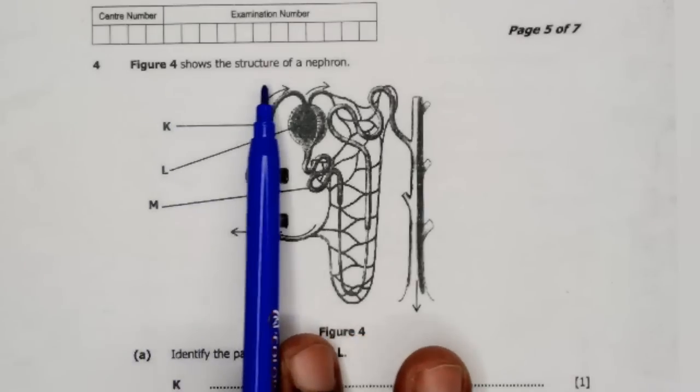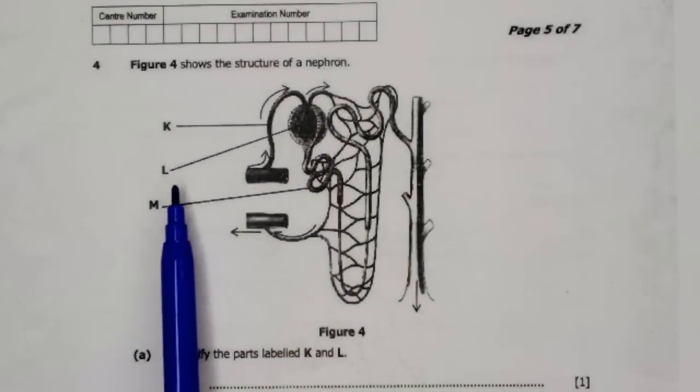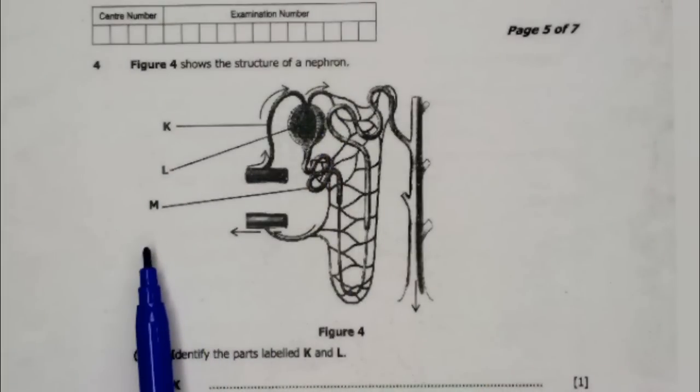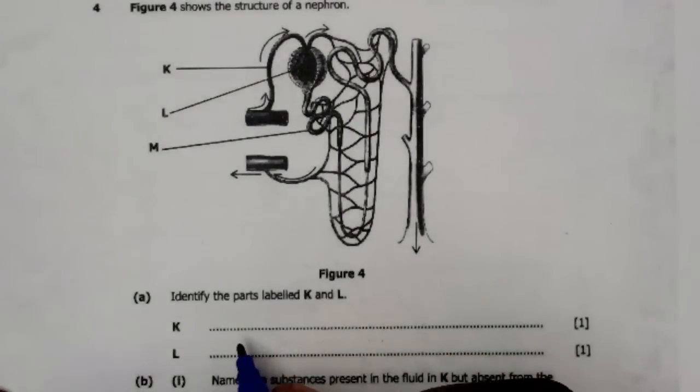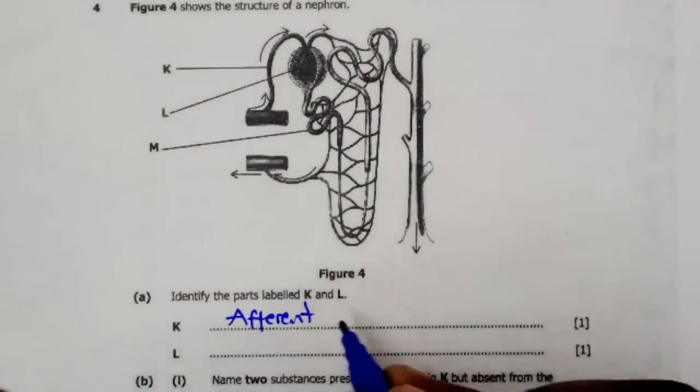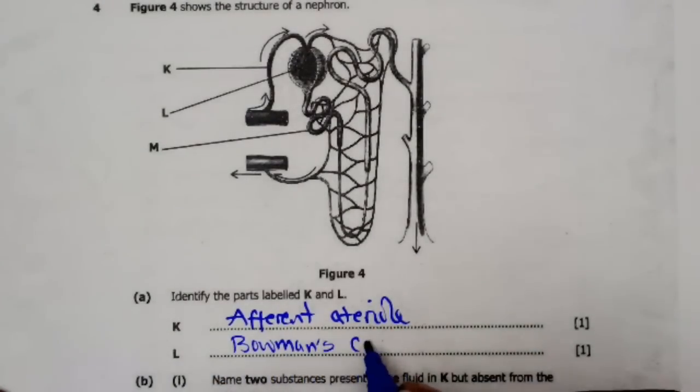Question four: Figure 4 shows the structure of the nephron. We have labeled parts K, L, and M. Part A: Identify the parts labeled K and L. Part K is the afferent arteriole and part L is the Bowman's capsule.